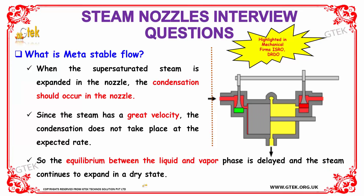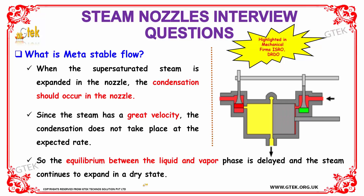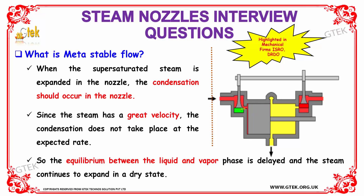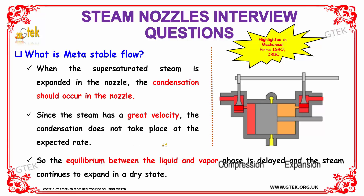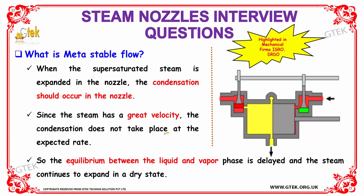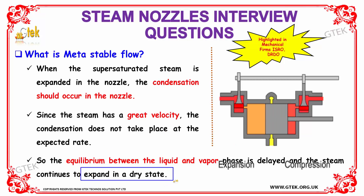What is meant by metastable flow? When supersaturated steam is expanded in the nozzle, condensation should occur, which is the obvious fact. Since the steam has great velocity, the condensation does not take place at the expected rate. The equilibrium between the liquid and vapor phase is delayed and the steam continues to expand in a dry state. This is the consideration of metastable flow.